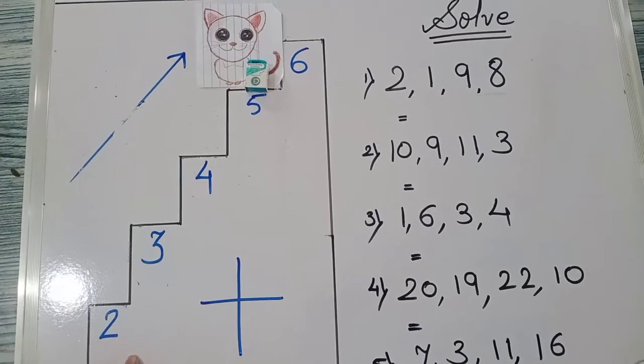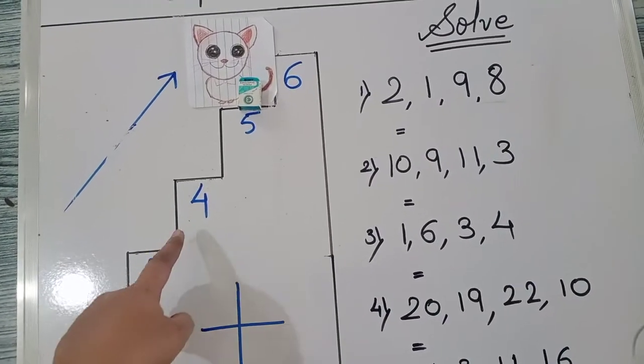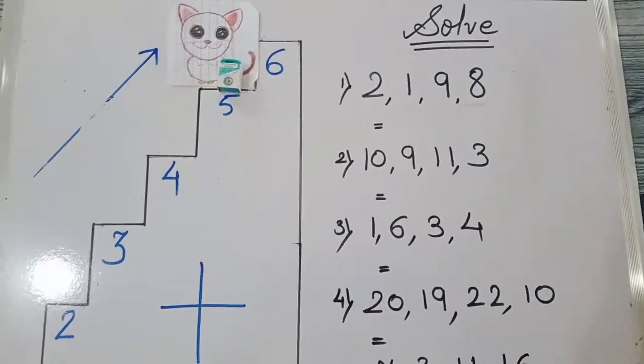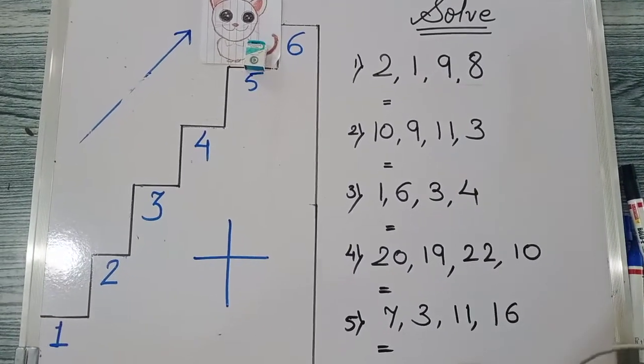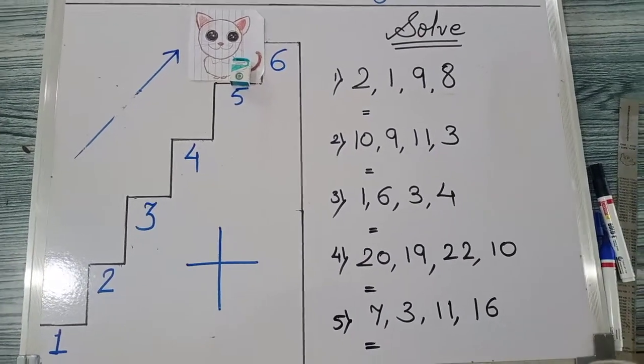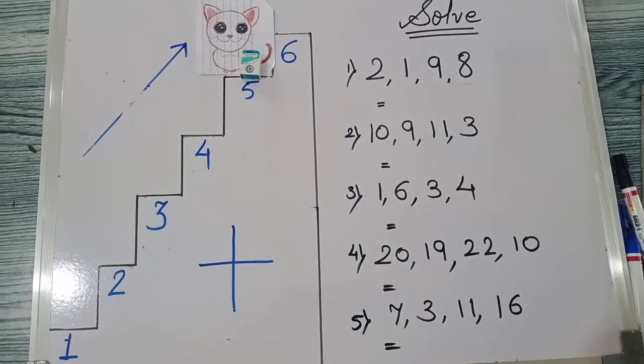First stair say second step, second say third, third say fourth, fourth say fifth. 1, 2, 3, 4, and 5. That means, increasing order me gai hai. Isi ko am ascending order bolte hai.